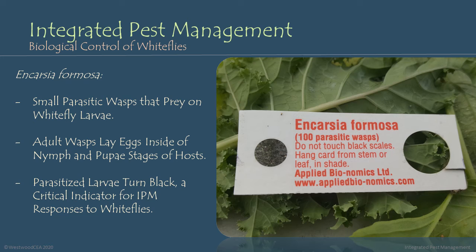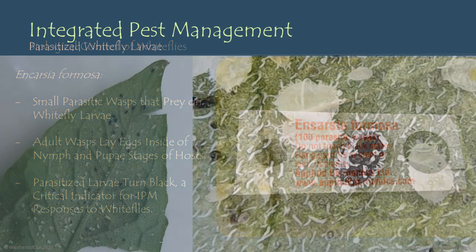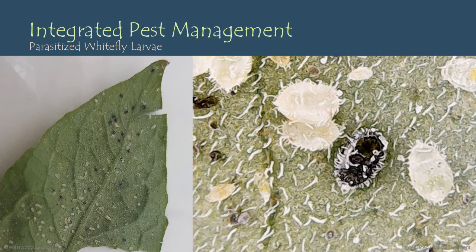Parasitized larvae turn black, and this is a critical indicator for integrated pest management responses to whiteflies. Here we see photos of whitefly larvae that are both healthy and parasitized — healthy larvae appear yellow or green, while parasitized larvae appear black. The ratio of healthy to parasitized larvae allows us to make informed decisions about when to spray and when to allow our Encarsia formosa populations to manage the whitefly population on their own, similarly to how we approach managing aphid infestations in our greenhouse.